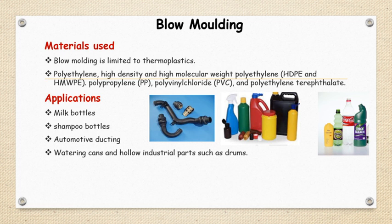You can list out different materials which can be processed by blow molding — any thermoplastic material — but HDPE, high-density polyethylene, is the ideal example. Other examples include polypropylene, polyvinyl chloride (PVC), and polyethylene terephthalate (PET). Applications include milk bottles, shampoo bottles, automotive ductings, watering cans, and hollow industrial parts such as drums.